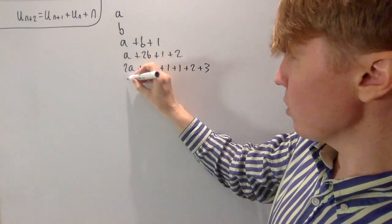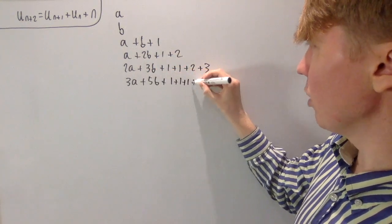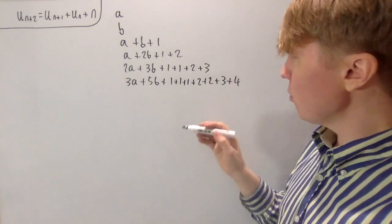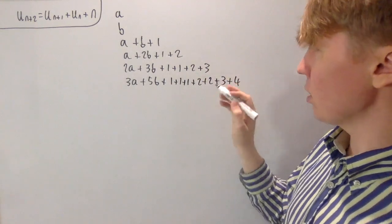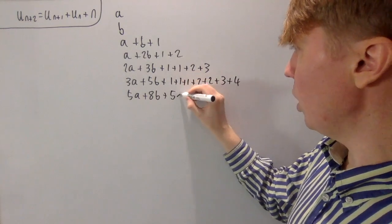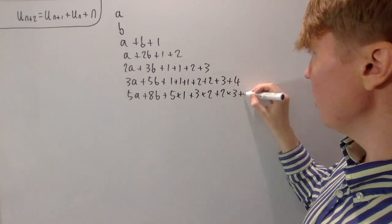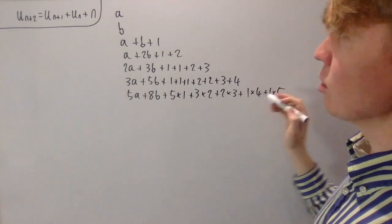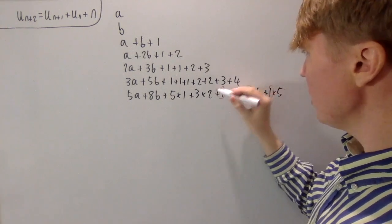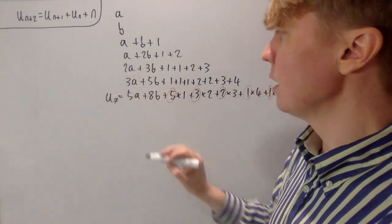Continuing a bit further: 3a, then 2b plus 3b gives 5b, and we have 1 plus 1 plus 1 plus 2 plus 2 plus 3, and we also add 4 from the plus-n rule. Carrying on, we get 5a plus 8b, and now we have 5 lots of 1, 3 lots of 2, 2 lots of 3, 1 lot of 4, and 1 lot of 5 from the plus-n rule. The coefficients of each of these numbers seem to be the Fibonacci numbers appearing in reverse order. This was u7, our 7th term in the sequence.